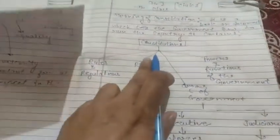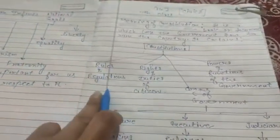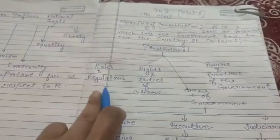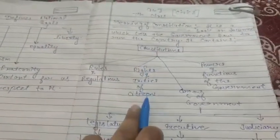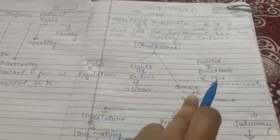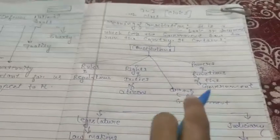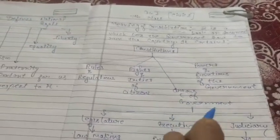Our constitution contains first of all rules and regulations that government has to follow, then rights and duties of citizens, then powers and functions of government, and the last one: organs of government.